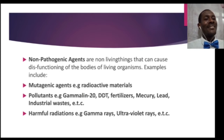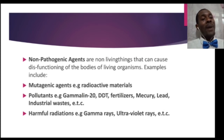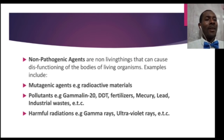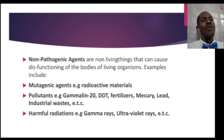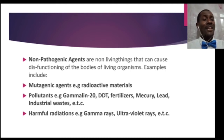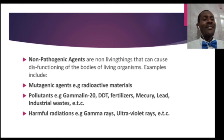We also have fertilizers. Fertilizers affect other living organisms negatively, apart from making crops grow and give more yield. When washed off into rivers, fertilizers affect fish and pond-based agriculture. There is also mercury and lead — two of the most dangerous pollutants in the world. They affect the nervous system of living things, mostly animals, and can cause death. Industrial waste is another pollutant. Harmful radiations such as gamma rays given off from radioactive elements can also cause mutation and are classified under mutagenic agents.